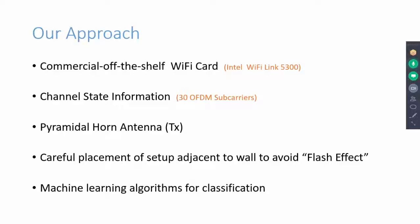We connect the transmitter with a pyramidal horn antenna to direct most of the transmit RF power towards the target area. We tackle flash effect by placing our sensing equipment adjacent to the wall so that strong wall reflections do not reach the receiver.